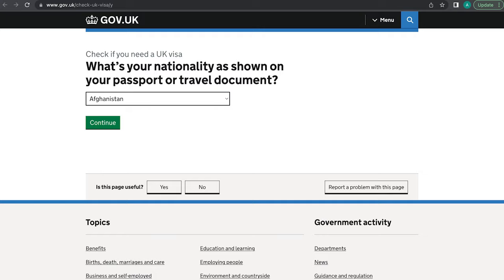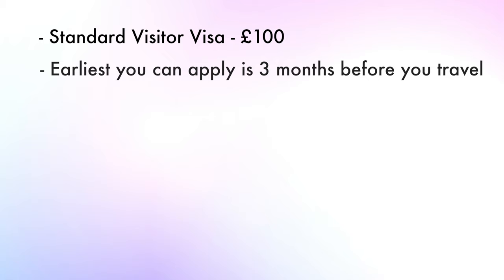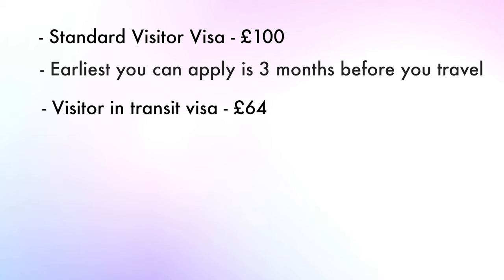Now let's talk about how much it costs. A standard visitor visa for the UK costs £100, and the earliest you can apply is three months before the date of your travel. If you need a transit visa instead — like in case the UK is on the way to another place you're going to — you can apply for a transit UK visitor visa and that costs £64.